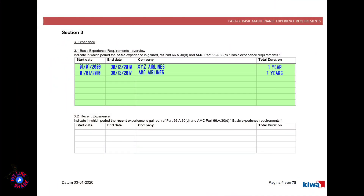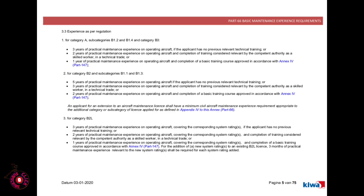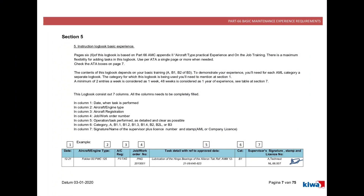On this page you will write the duration of experience in a particular company, and here you will write your recent experience — that is, the current experience just prior to your application. This page mentions the experience needed as per regulation in different categories. This page has to be signed by the quality control manager. Here are the instructions for writing the logbook — let's see each of the following pages.